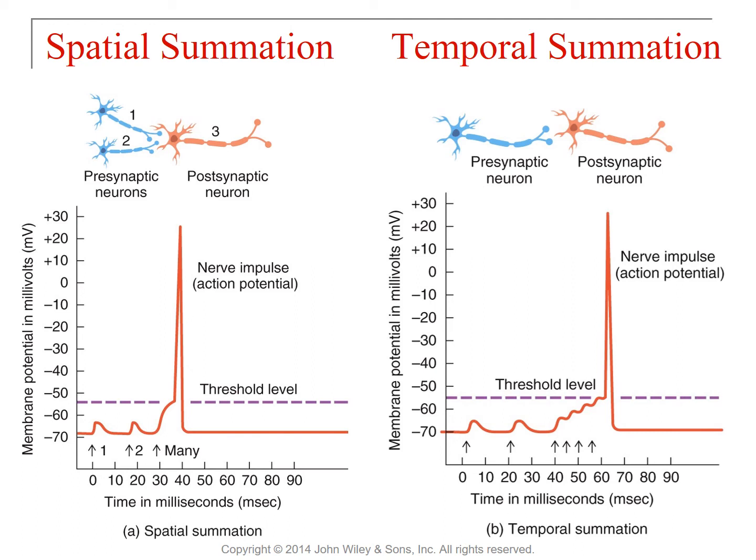Here's an analogy: if you're parenting or babysitting multiple kids, one kid saying 'Mom' occasionally can be ignored. But if both kids or three kids yell 'Mom' at the same time — that's spatial summation — you have to go see what's going on. That's your action potential. And for temporal summation: you can ignore a kid saying 'Mom' just once in a while, but if they're saying 'Mom, Mom, Mom, Mom' rapidly, you're going to respond. That's temporal summation.